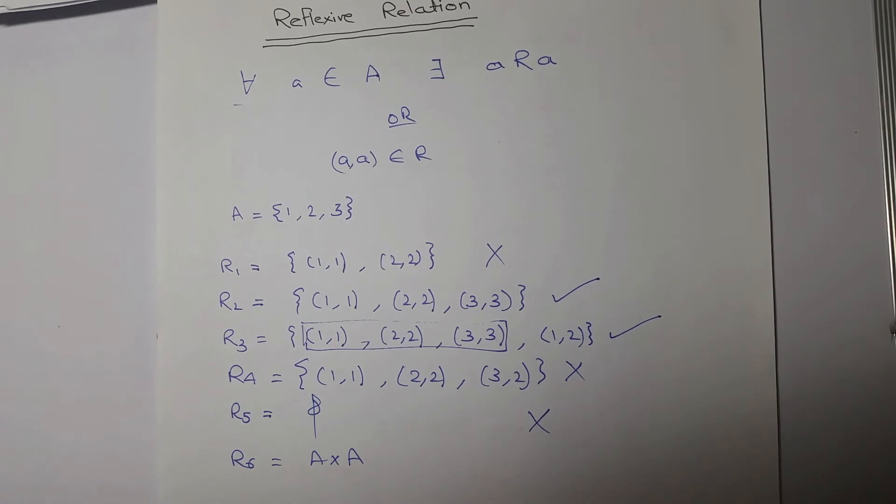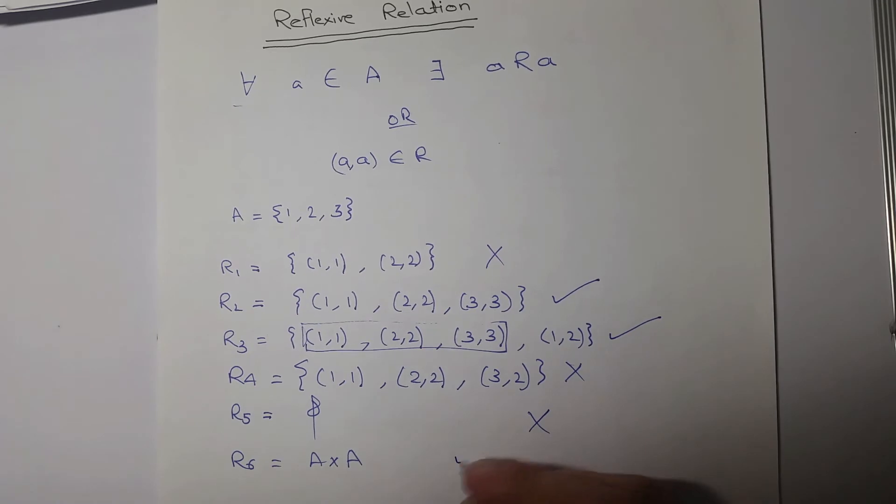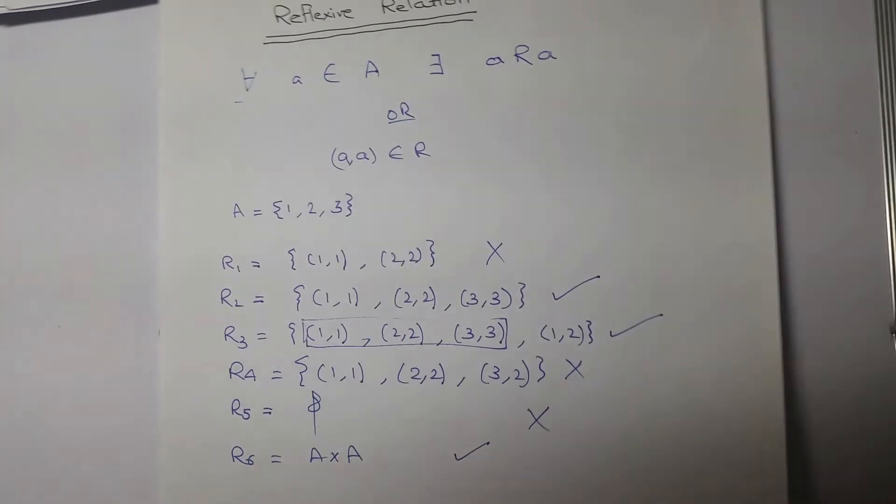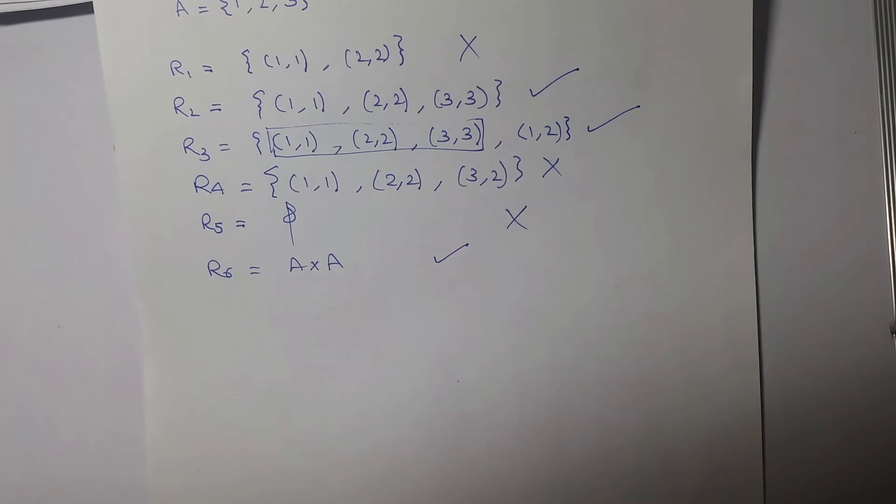Since Cartesian product will have all a's related to all other a's, it will definitely have all elements related to themselves. So this is a reflexive relation. Now an important point comes as to how do we calculate the number of reflexive relations.